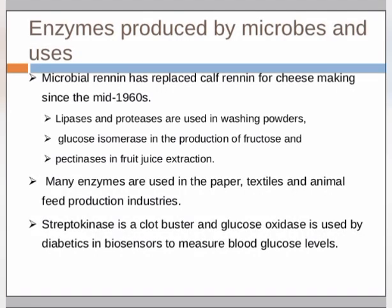Enzymes produced by microbes and their uses. Microbial rennet has replaced calf rennet for cheese making since the mid-1960s. Cheese and yogurt making involve an active role for microbes. Lipases and proteases are used in washing powders. Glucose isomerases are used in the production of fructose, and pectinases are used in fruit juice extraction.